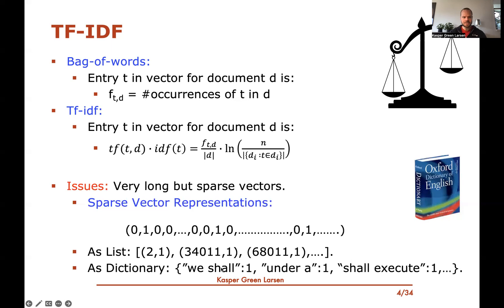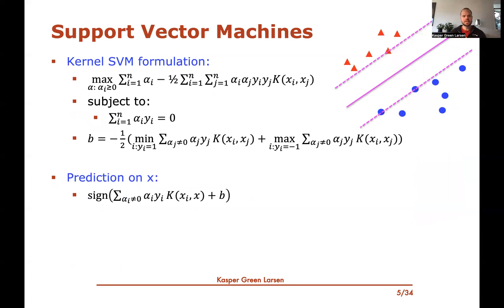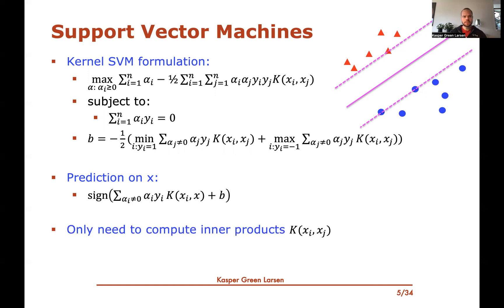We also saw dictionaries where you store a mapping from a word or n-gram to its count. These sparse representations can be used with support vector machines, since SVMs only require computing the kernel — the inner product between two feature vectors — and sparse representations let you compute inner products quickly.